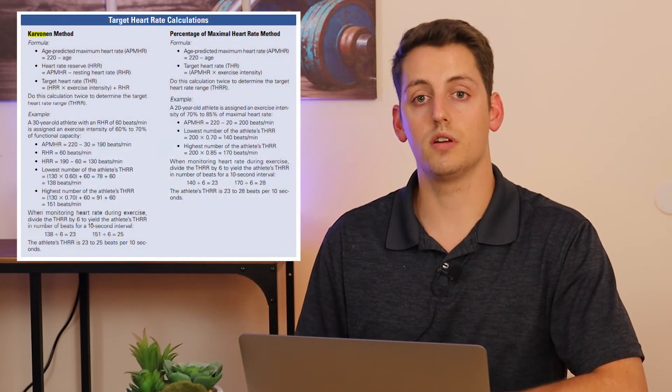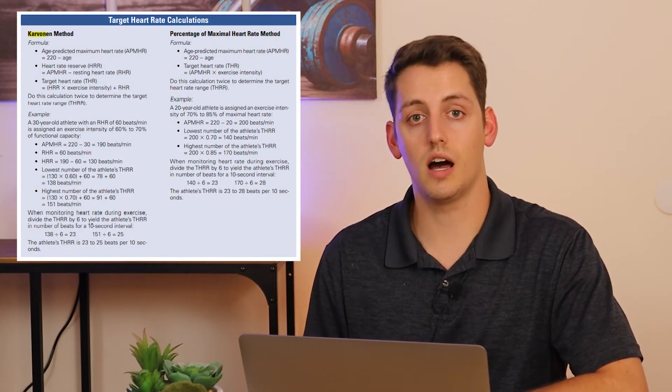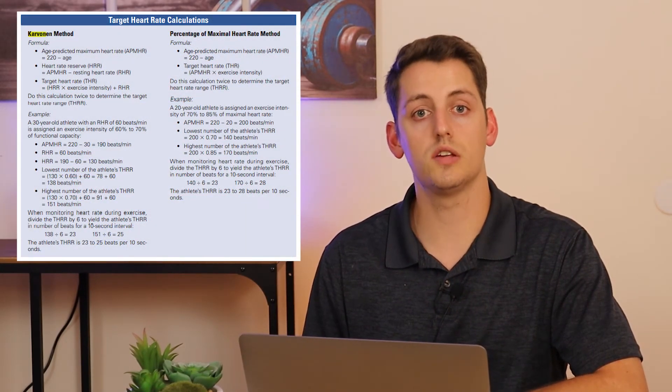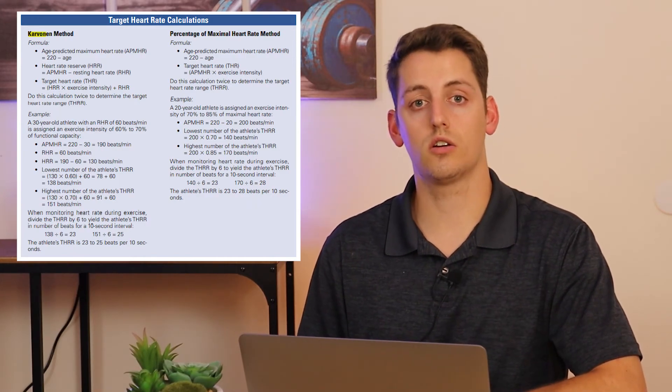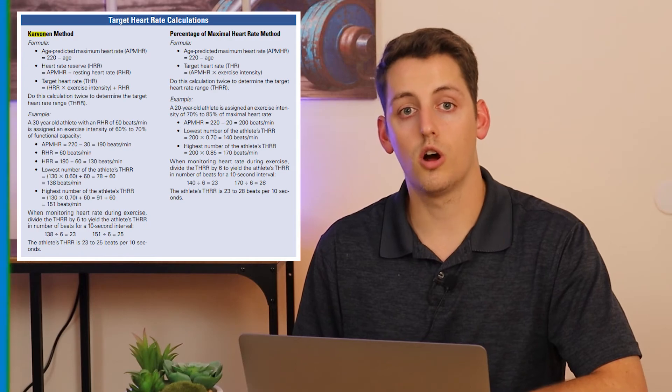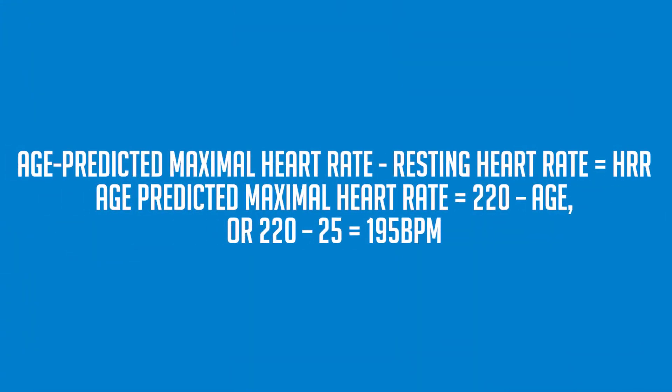Let's recall that the Karvonen method is heart rate reserve times exercise intensity plus resting heart rate equals your target heart rate. As such, you need to calculate the heart rate reserve. The heart rate reserve is age predicted maximal heart rate minus resting heart rate. In the example, our age predicted maximal heart rate is 220 minus our athlete's age, which is 25, giving us 195 beats per minute. Finally, we need to calculate the lower end of the range and the higher end of the range using the lower and higher intensities. In this case, 60% and 70% respectively.